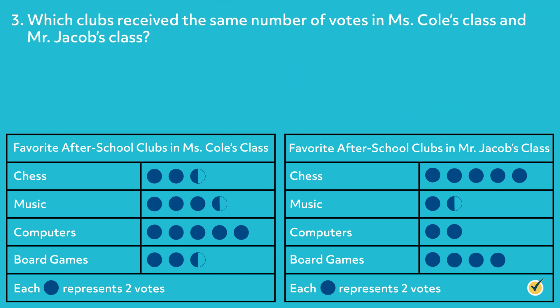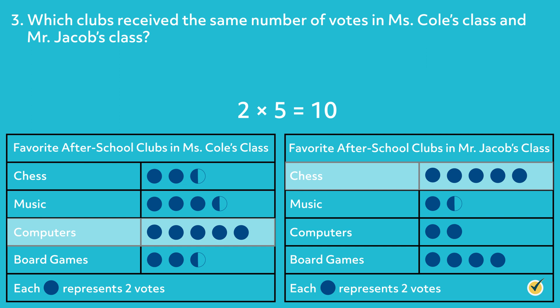Which clubs received the same number of votes in Ms. Cole's class and Mr. Jacobs' class? There are five symbols next to computers in Ms. Cole's class and five symbols next to chess club in Mr. Jacobs' class. Since each symbol represents two votes and two times five equals ten, each club received ten votes. Great job! I hope this video about pictographs was helpful. Thanks for watching and happy studying!